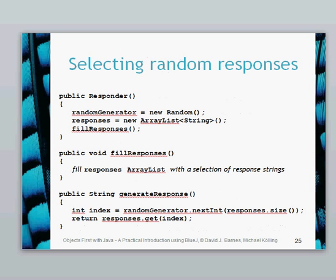Here's the structure of the program. We're going to create our Random object, which we're going to call randomGenerator. We're then going to create our ArrayList, which we're going to call responses. Then we're going to fill responses. The fillResponses method is just going to create an ArrayList full of our responses. Finally, the generateResponse method, which previously was pretty basic, is going to be a little bit more complicated now.